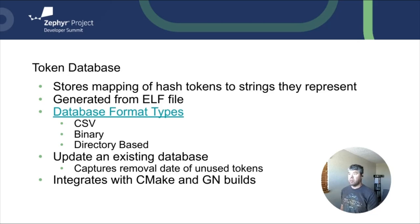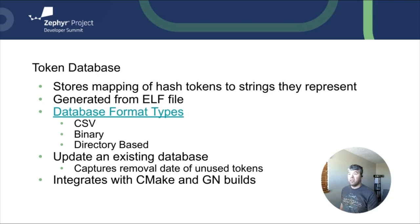There are three database format types supported by Pigweed. First is CSV, which is a comma-separated file. This format is helpful for debugging purposes as it's human readable. Next, you have the binary format, which is more compact than the CSV database and saves you space. And last, you have the directory-based format. Pigweed can consume a directory of CSV databases. A directory will be searched recursively for a Pigweed tokenizer CSV suffix. This format is optimized for storage in a Git repository alongside the source code.